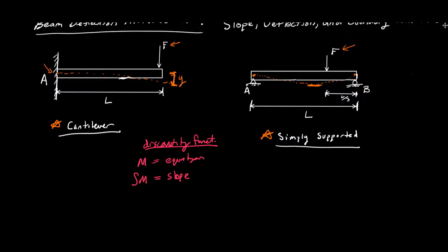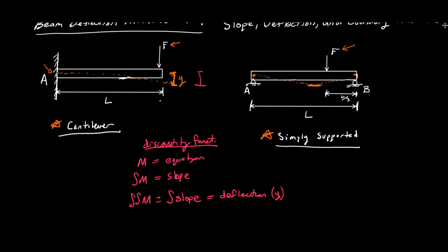For example, for a simply supported beam, we can write an equation that tells us what the slope is at each point throughout the beam. If we integrate the moment equation twice — which is the same as integrating the slope equation once — we get an equation for the deflection of the beam, which is that distance Y we were trying to find. So we'd find the deflection at any distance X from support A, and the maximum deflection for the cantilever would be at X equals L, the full length of the beam.